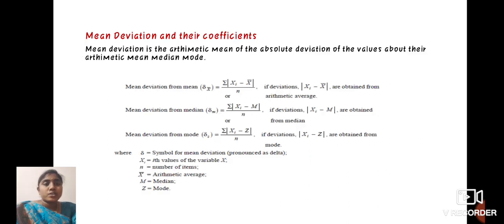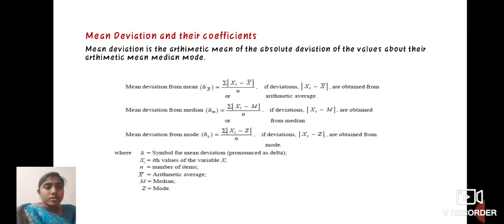Mean deviation and the coefficient. Mean deviation is the arithmetic mean of the absolute deviation of the values about the arithmetic mean, mode, or median. Mean deviation from mean: summation of modulus of Xi minus X-bar divided by N, where modulus of Xi minus X-bar are obtained from the arithmetic average. Mean deviation from median, del M, equals summation of modulus of Xi minus M divided by N. Mean deviation from mode, del Z, equals summation of Xi minus Z divided by N.